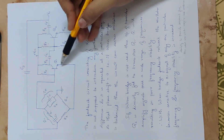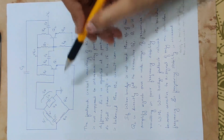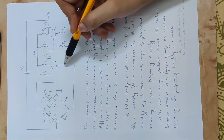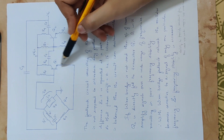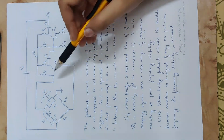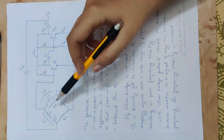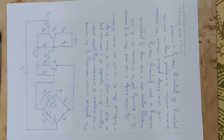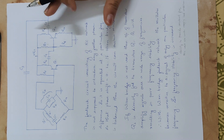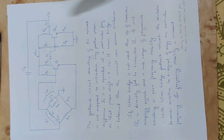In this circuit, this resistor is R4 and this resistor is R2. This completes the Wien Bridge Oscillator circuit.